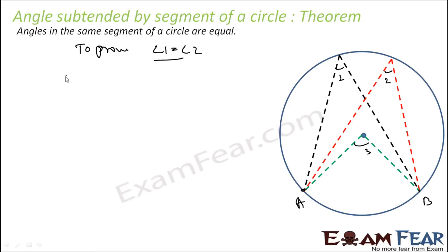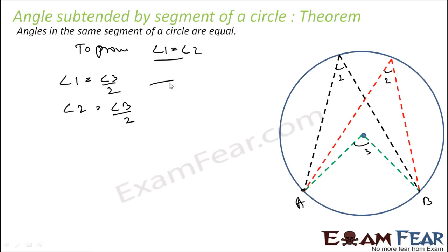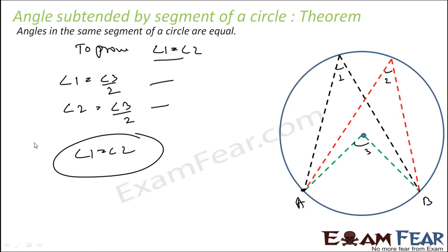To prove angle 1 equals angle 2: angle 1 is half of angle 3 (by the central angle theorem), and angle 2 is also half of angle 3. Since both right-hand sides are equal, angle 1 equals angle 2. Angles in the same segment of a circle are equal.